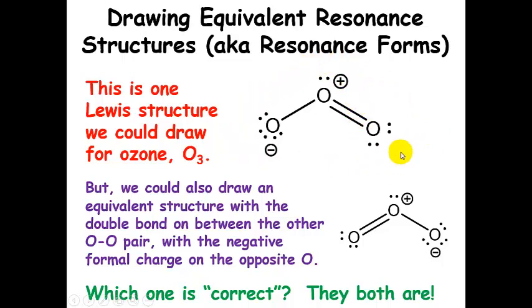If we were to have another person draw the Lewis structure for ozone, they might put the double bond on this side and move a lone pair over to this oxygen like we see in this structure instead. There's no reason to put the double bond on one side versus the other side — all the atoms are the same, everything's equivalent. So this is a case where we can draw two equivalent resonant structures for the ozone molecule.